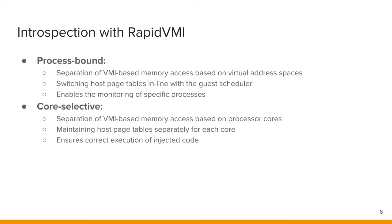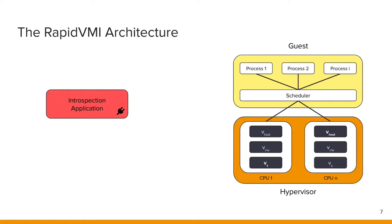There are three distinct types of ALT-P2M views in our introspection architecture. First, there is the host view, which contains the original unmodified mapping of the hypervisor. We use this view for single-stepping on breakpoint events and as a default for non-monitored processes and processor cores. Next, we have the read-write view, in which the modified pages are marked as read-only. We use this view to hide injected code on memory access.